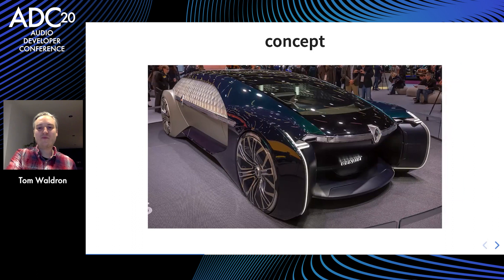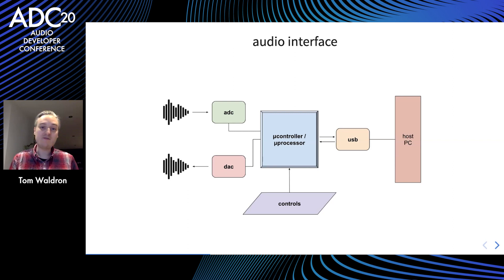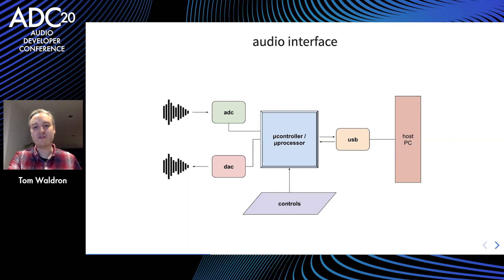What kind of device should we build? Maybe we want an audio interface — we might have a microcontroller or microprocessor at the heart, an analog to digital converter bringing audio in, a digital to analog converter sending audio back out, a few physical controls like level controls, along with a USB or some sort of interface to the host computer sending and receiving audio or control data. It doesn't have to be USB — it could be Bluetooth, PCIe, whatever.